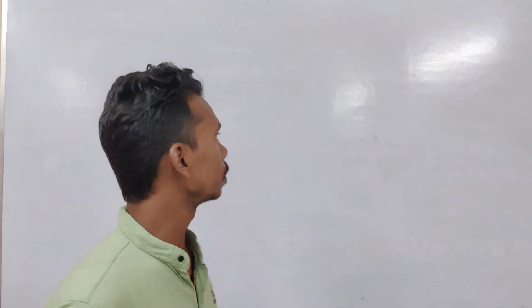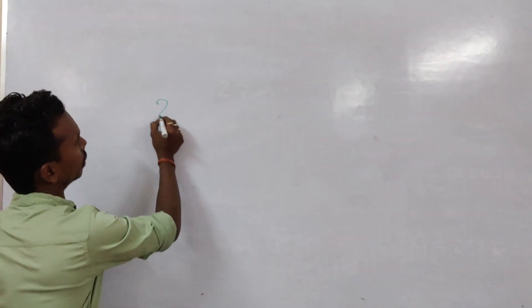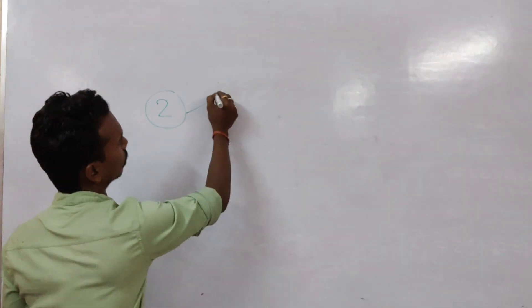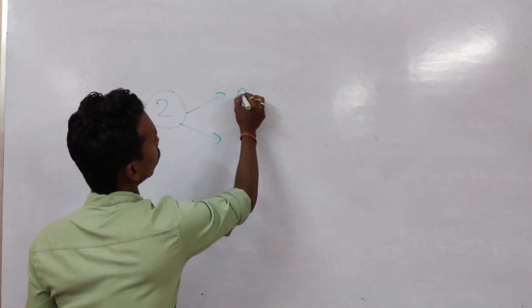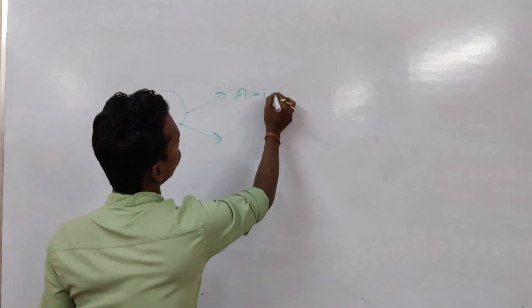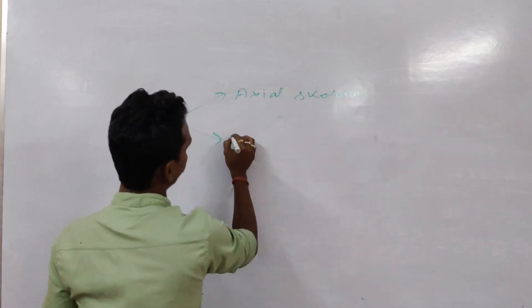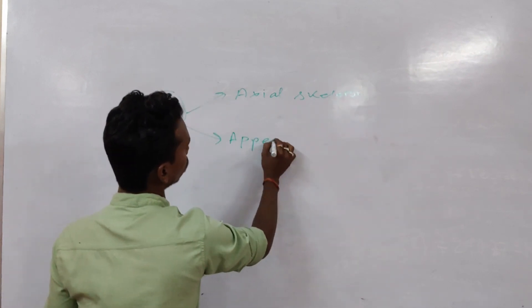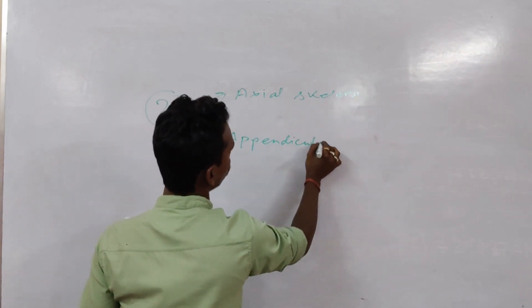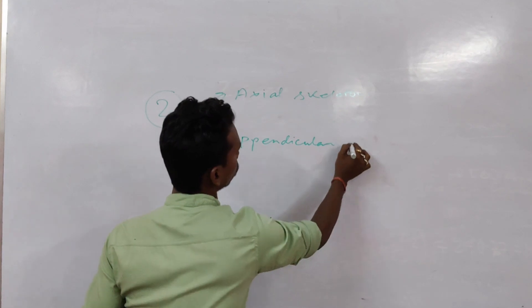Hello, Pandaganda Namaskar and welcome back to my YouTube channel Scythe Education. Today we will be studying about the skeletal system of humans. If we study the skeletal system of human, we can describe it into two parts: one is your axial skeleton and another one is your appendicular skeleton.